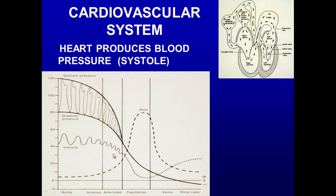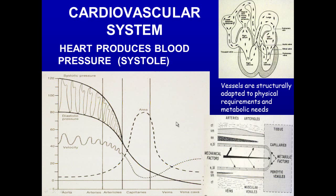The greatest surface area is in capillaries, where you have gas exchange and exchange of nutrients and waste. You also have the lowest velocity at that point in time. Blood vessels are strictly adapted for physical requirements — that is, to withstand the pressure that we see — and metabolic needs, or to be thin-walled so they can have exchange at the capillaries.